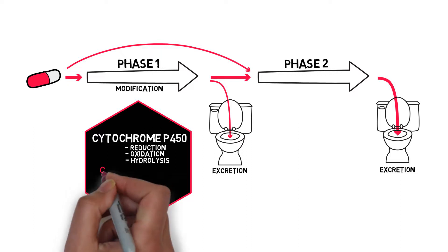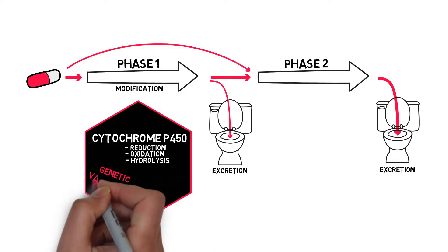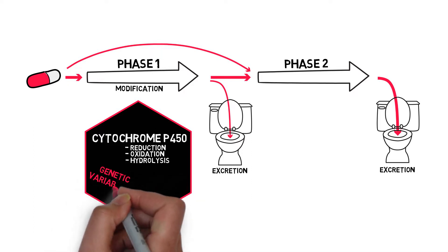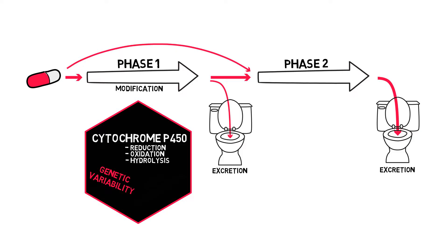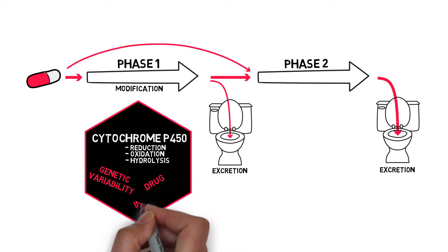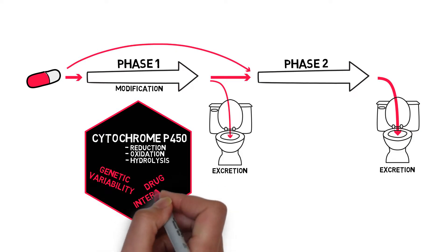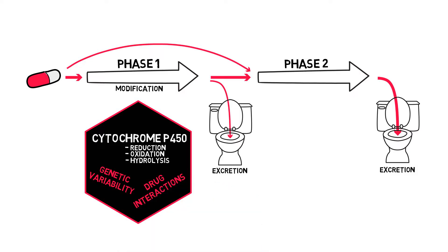Pharmacokinetically, cytochrome P450 is of interest because there is great genetic variability in the expression of these enzymes. And more importantly, it is involved in drug interactions, because these enzymes can be induced or inhibited.